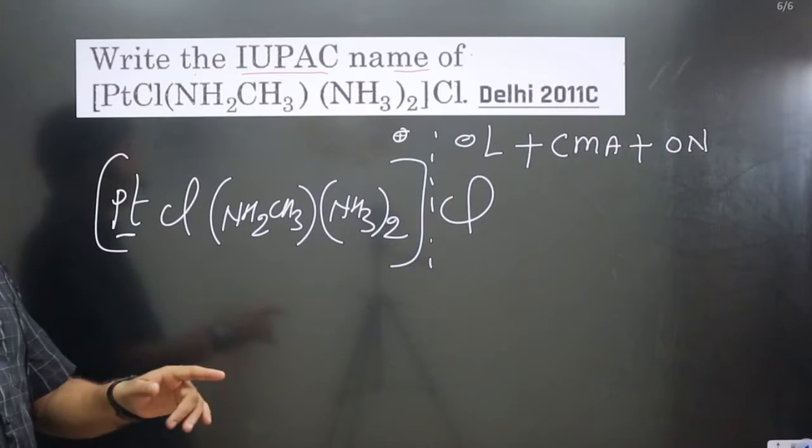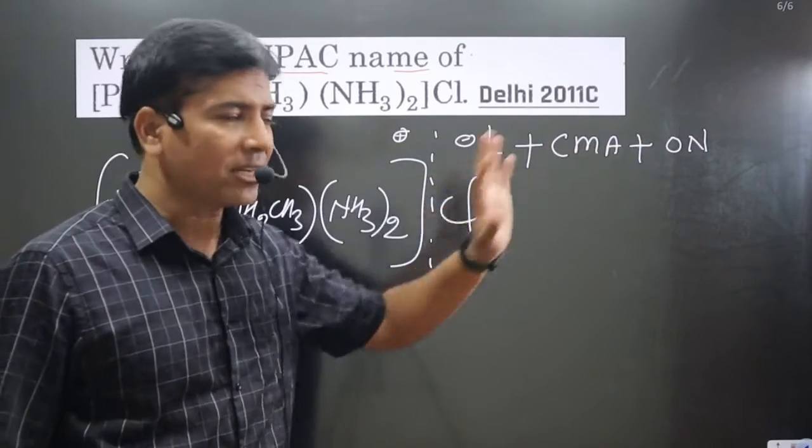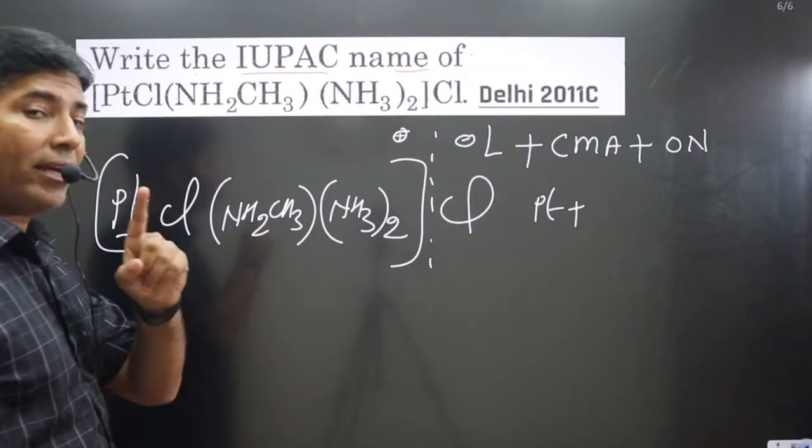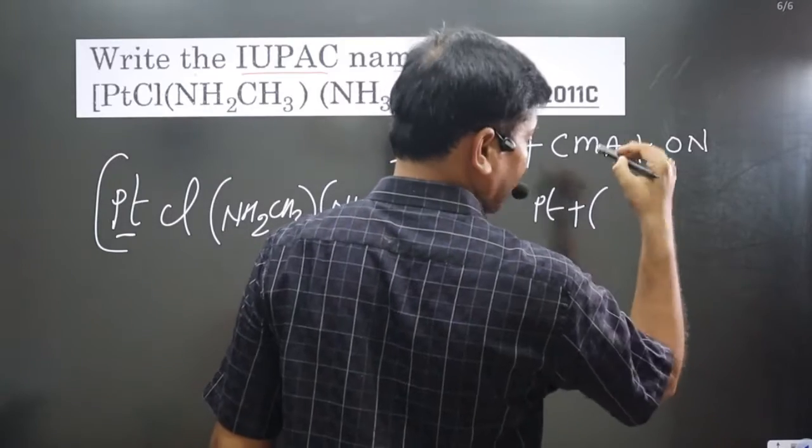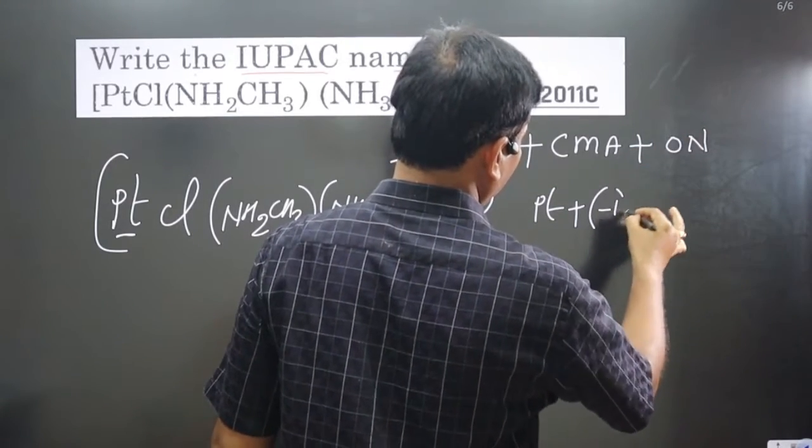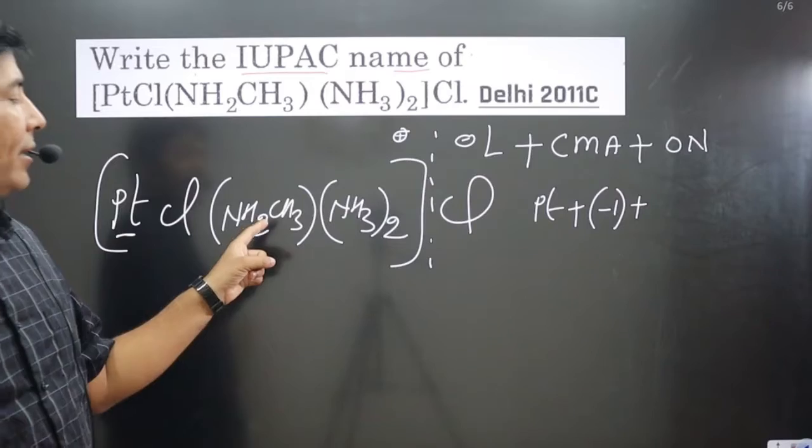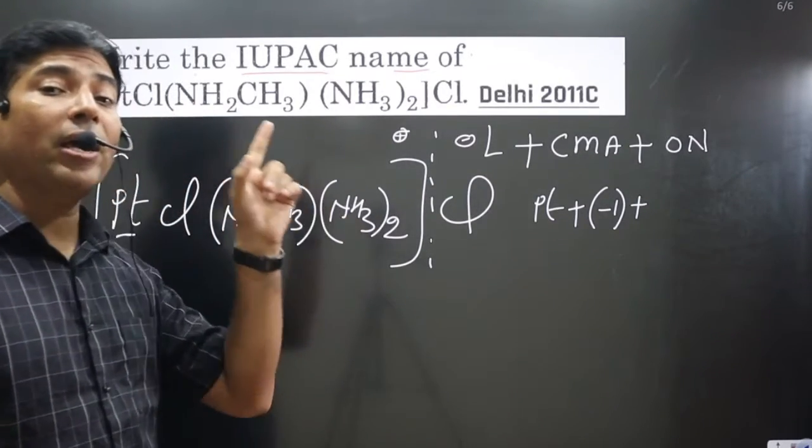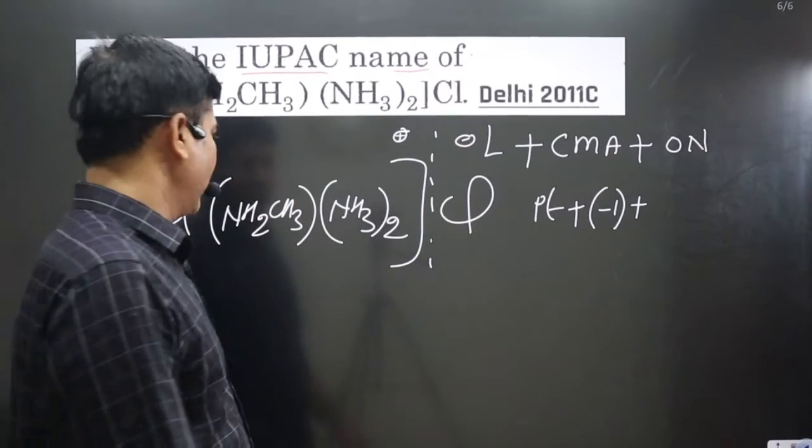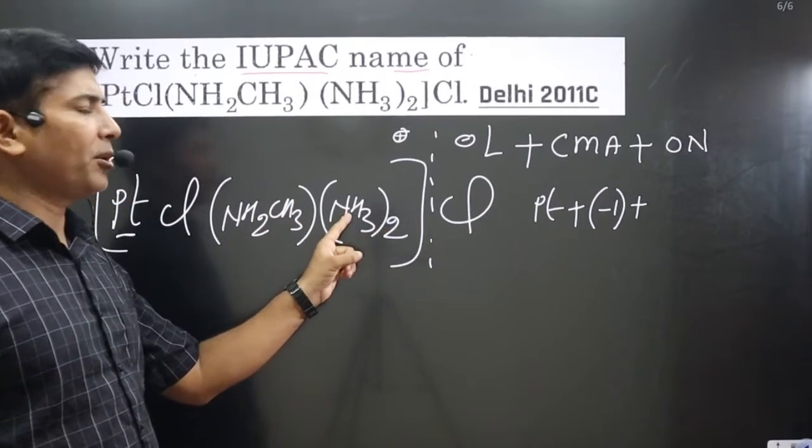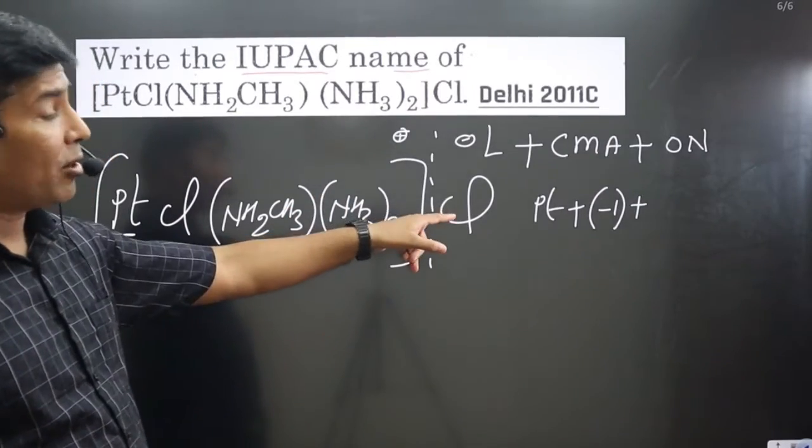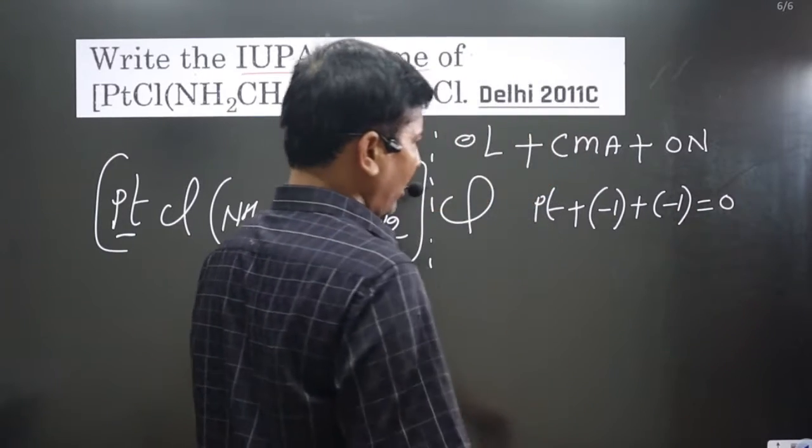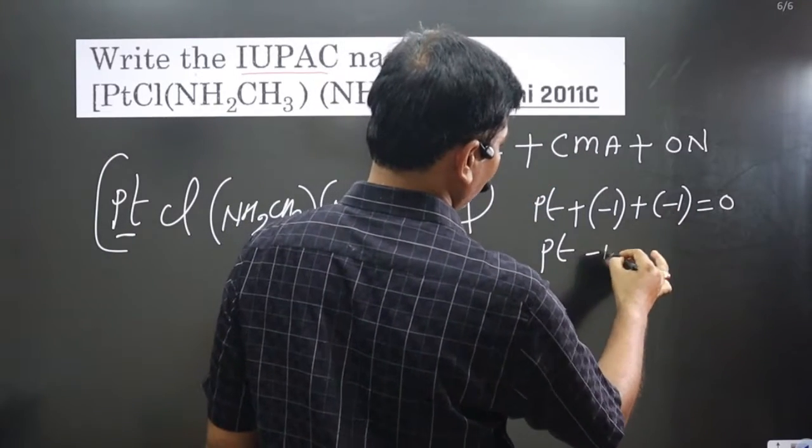Next we calculate the oxidation number of the central metal atom. Platinum plus chloride carries minus one charge - this is a negative unidentate ligand. This is a neutral ligand carrying zero charge. This is also neutral, zero charge, two multiplied by zero. Then chloride is minus one. Platinum minus one minus one equals zero, so platinum is in plus two oxidation state.